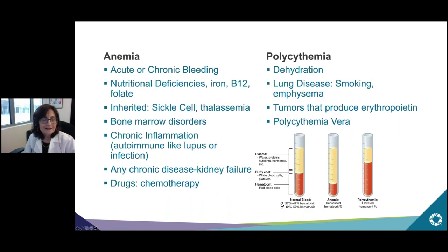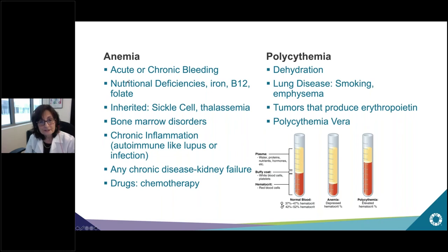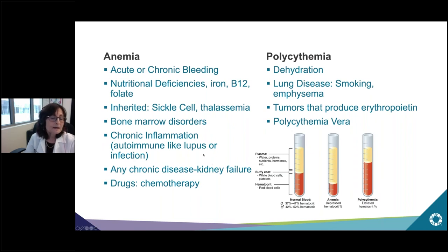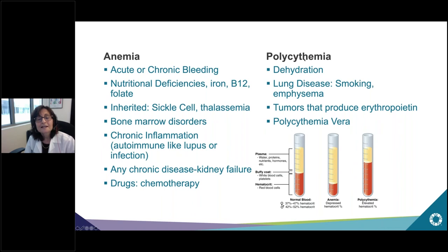Anemia is common in chronic kidney disease. There are many causes: acute or chronic bleeding, nutritional deficiency from lack of iron, B12, or folate, inherited causes such as sickle cell disorder and thalassemia, bone marrow disorders, chronic inflammation, chronic kidney disease and kidney failure, and drugs such as chemotherapy. You can also have too many red cells — called polycythemia — from severe dehydration or bone marrow disorders.